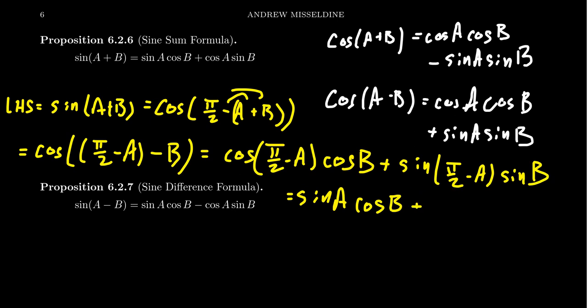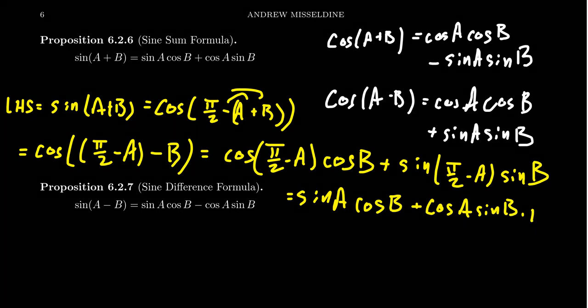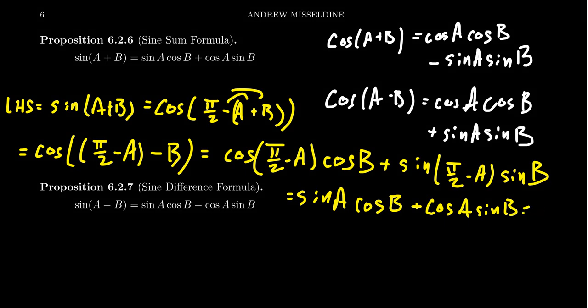And sine of pi halves minus a, by the co-function theorem, is just cosine of a. So we end up with cosine of a times sine of b, thus proving the identity — we get that sine of a plus b equals sine of a cosine of b plus cosine of a sine of b.